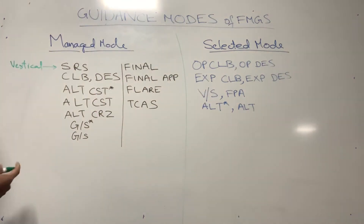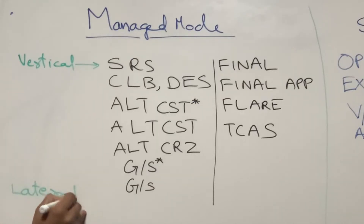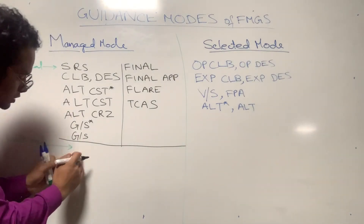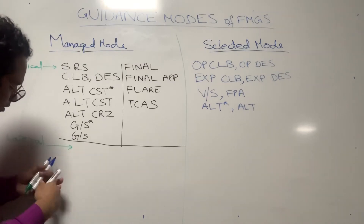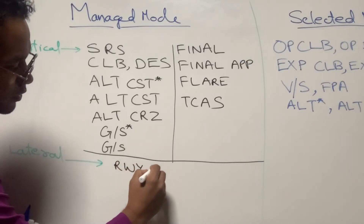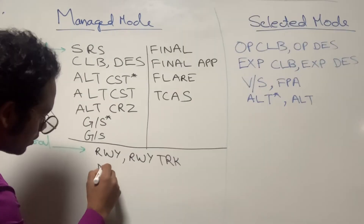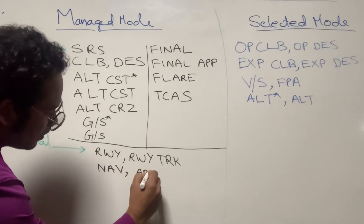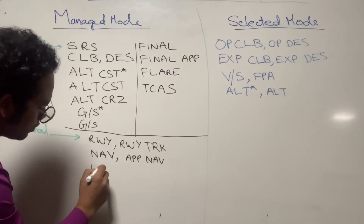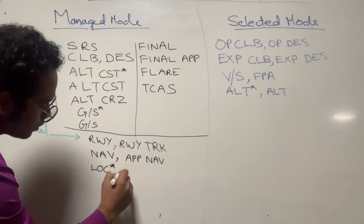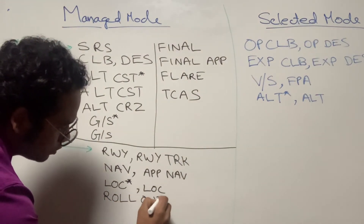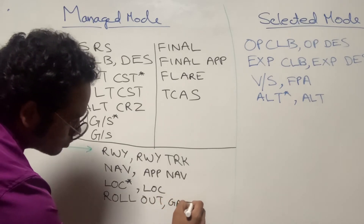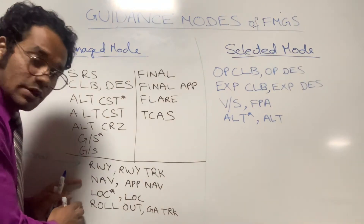Now I'll tell you about all the FMAs for the Lateral Profile in Managed Mode as well as Selected Mode. For the Lateral Profile, the Managed Mode FMAs are: RWY (Runway), RWY TRK (Runway Track), NAV, APP NAV, LOC* (Localizer Capture), LOC (Localizer Track), ROLLOUT, and GA TRK (Go-Around Track Mode).